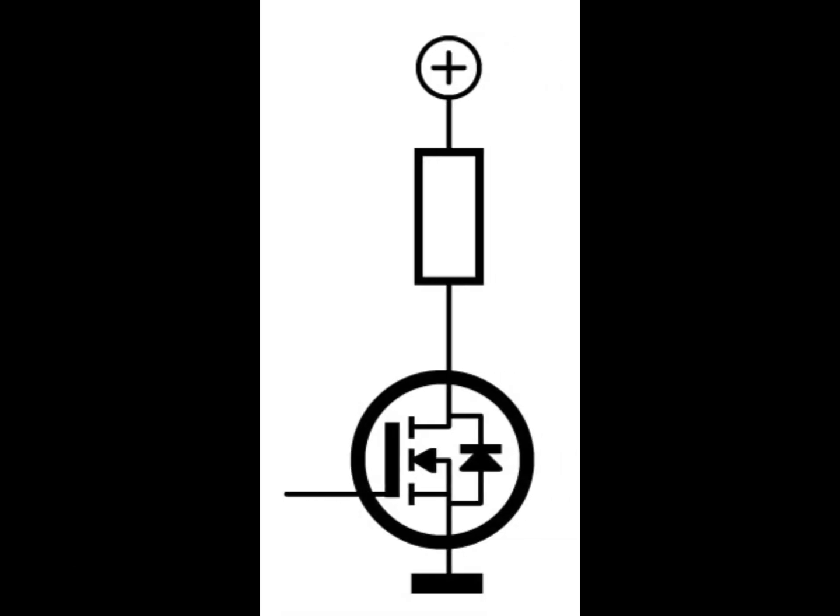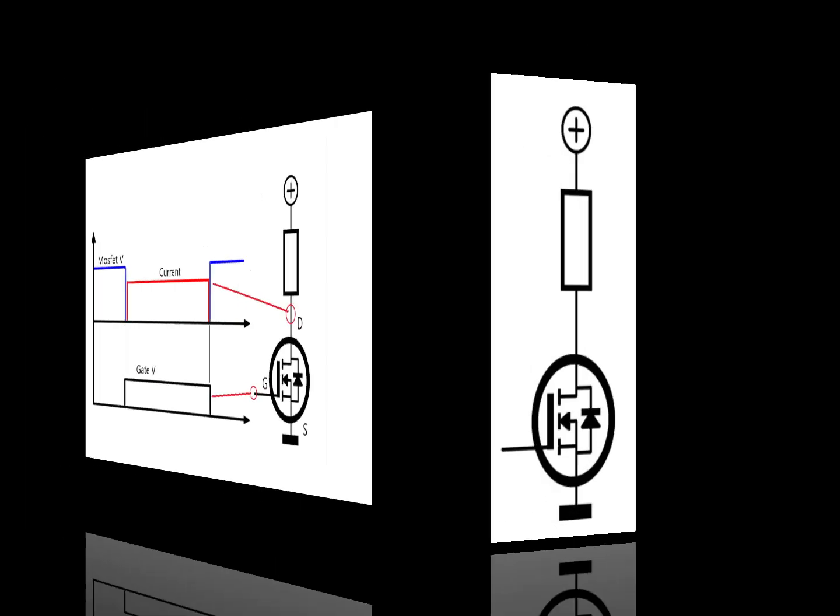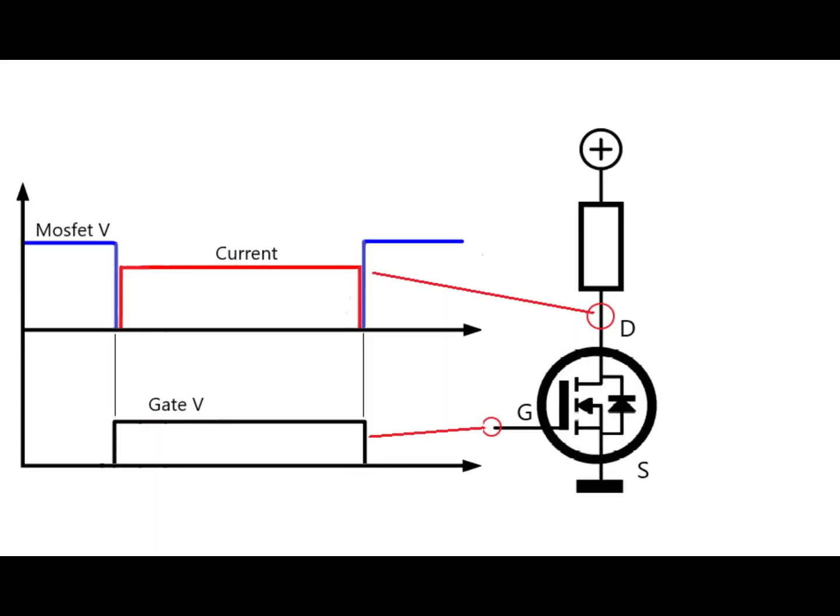Here for example I show a MOSFET which we want to use to pull current through some type of load. When a pulse is applied to the gate, the MOSFET drain voltage will go low and then high again after the gate pulse goes off.